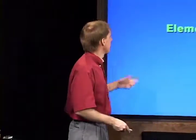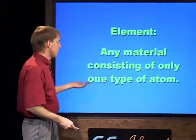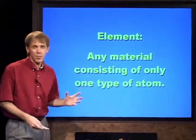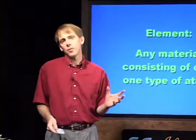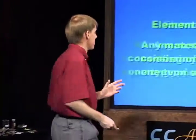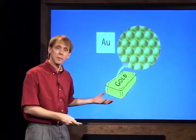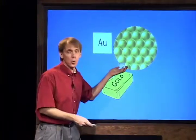Let's talk about what we mean by an element. An element is a material that you can hold that consists of only one type of atom. When I say there are about a hundred different elements, I'm saying there are about a hundred different types of atoms. If you have gold, gold is an example of an element because it consists of only gold atoms.